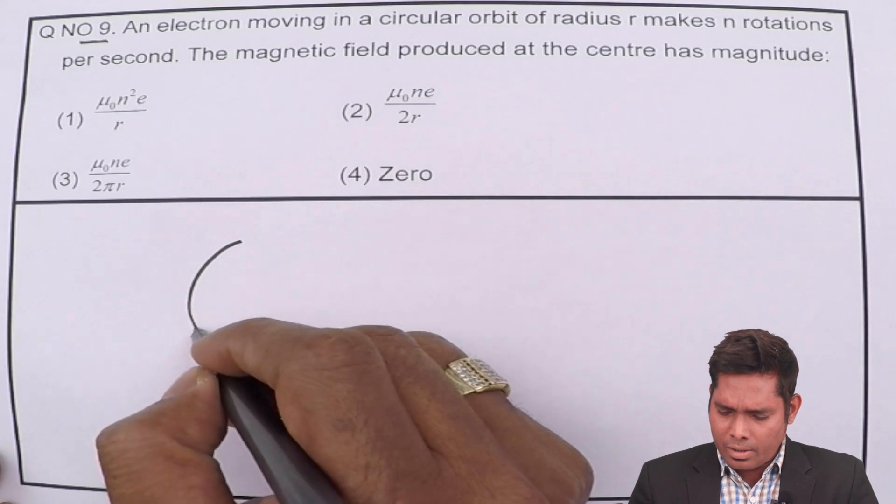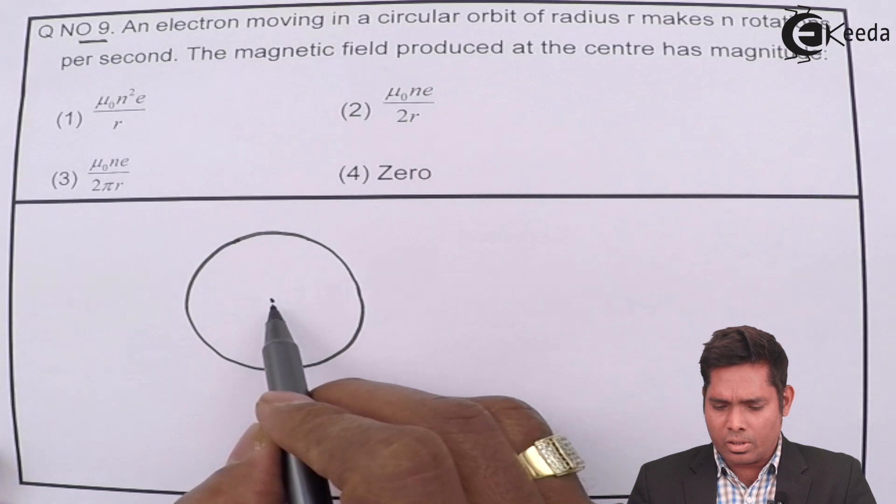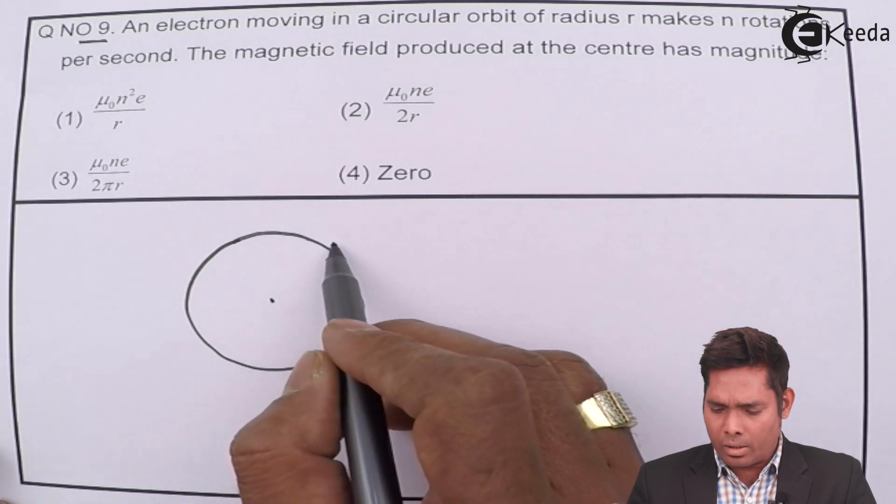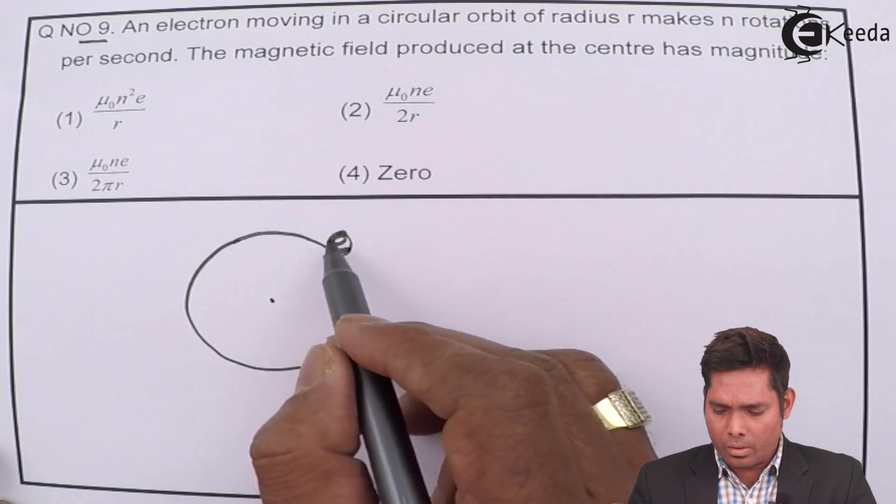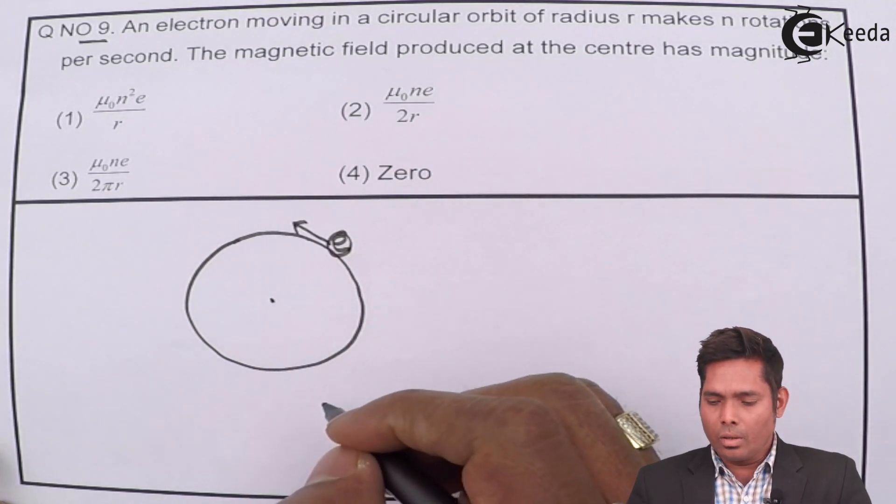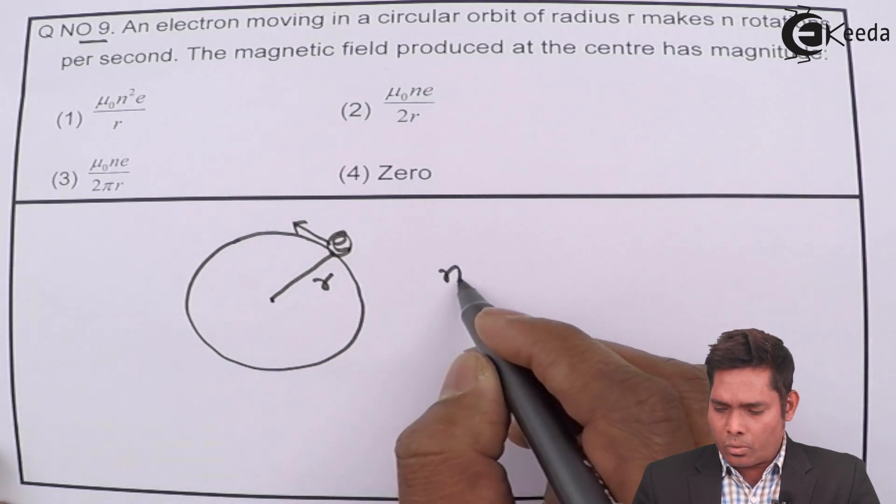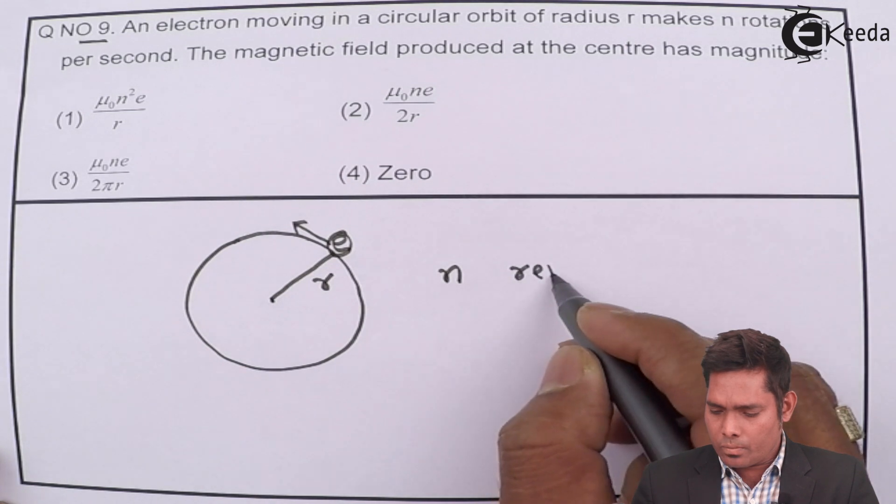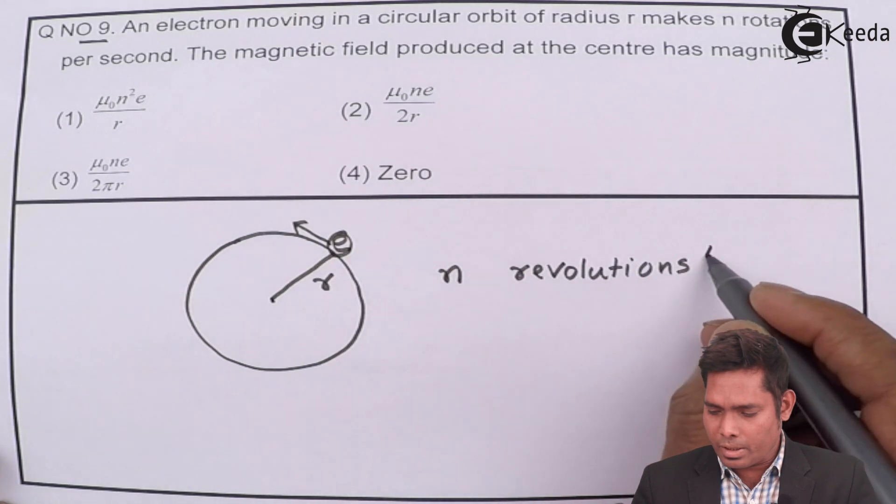If there is a circular orbit like this, this is the centre and an electron is moving like this. Its radius is R and it makes n rotations, n revolutions per second.